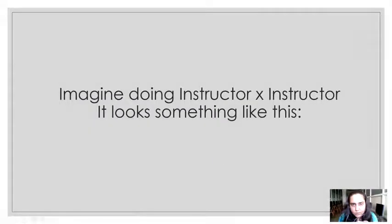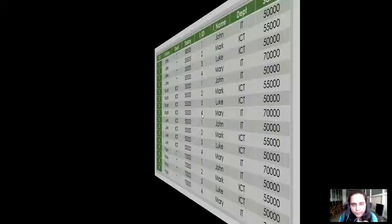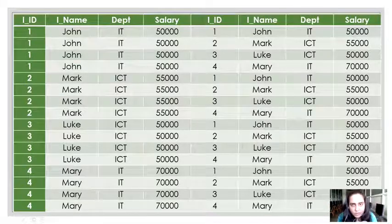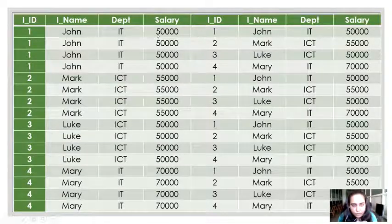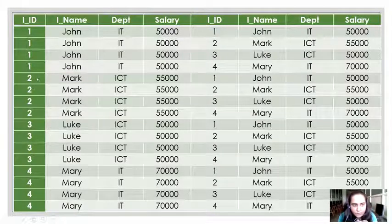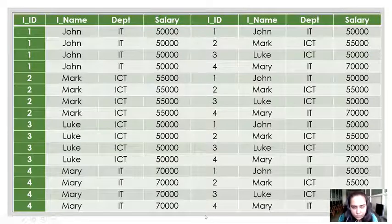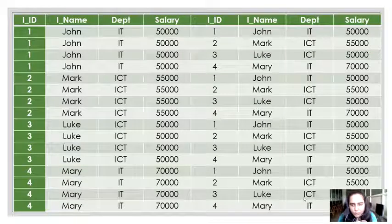So let's see what that looks like. This is a huge table containing 16 rows and eight columns. The first row is combined with all four rows, then the second row is combined four times, the third row is combined with all four, and the fourth row is also combined with all four.